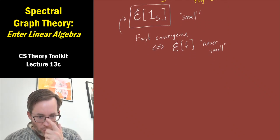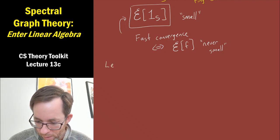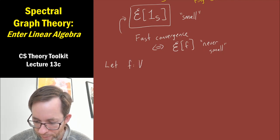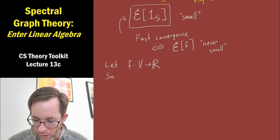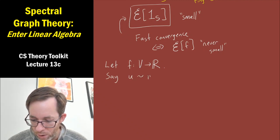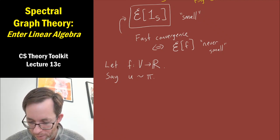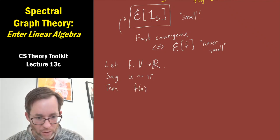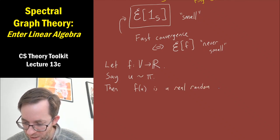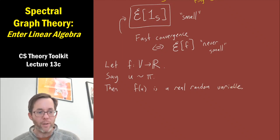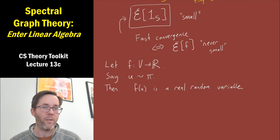Let's say we are studying a function of the vertices, f, that labels each vertex by a real number. And let's say that we choose a random vertex u according to the special invariant or stationary distribution pi. Then the value of f at u is a real random variable. What do we do typically when we have a random variable? We typically first calculate its mean and its variance.